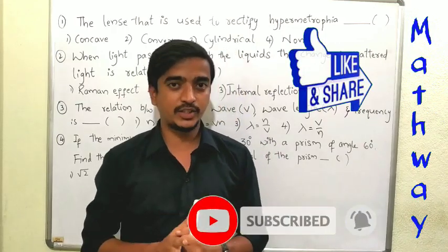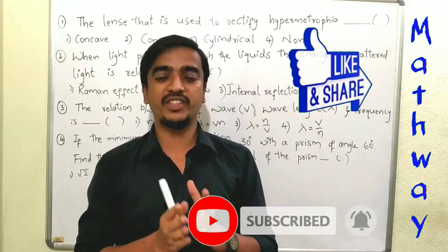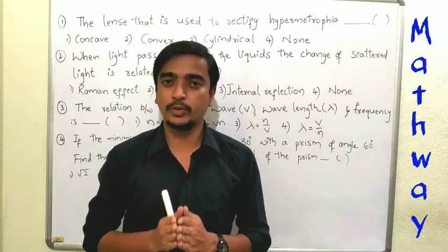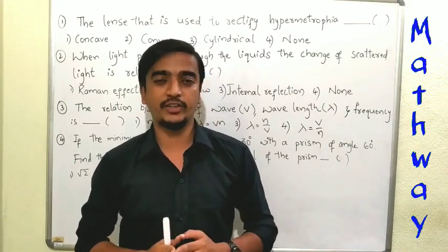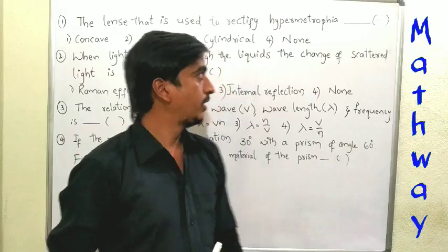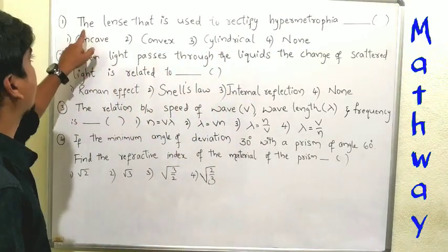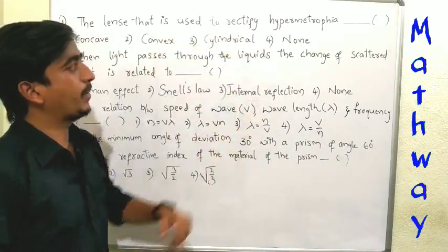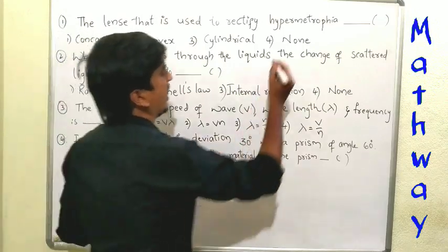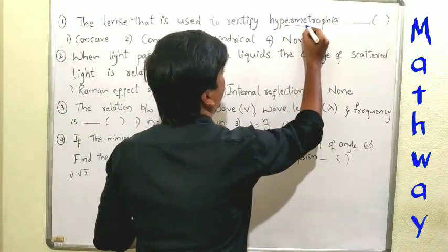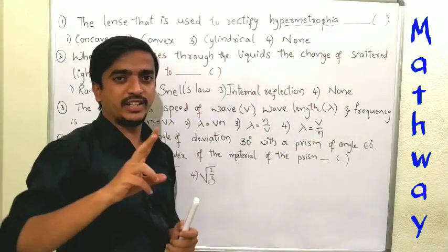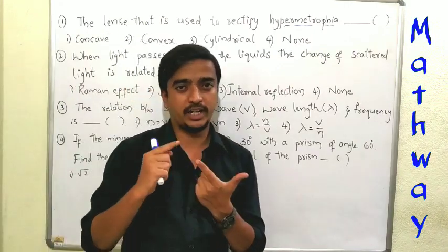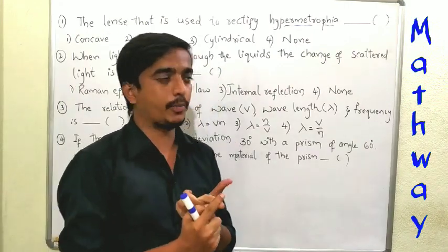We are going to discuss about physics. First, we will start in 2020. The lens that is used to rectify hypermetropia. So there are two types of eye defects: myopia and hypermetropia.